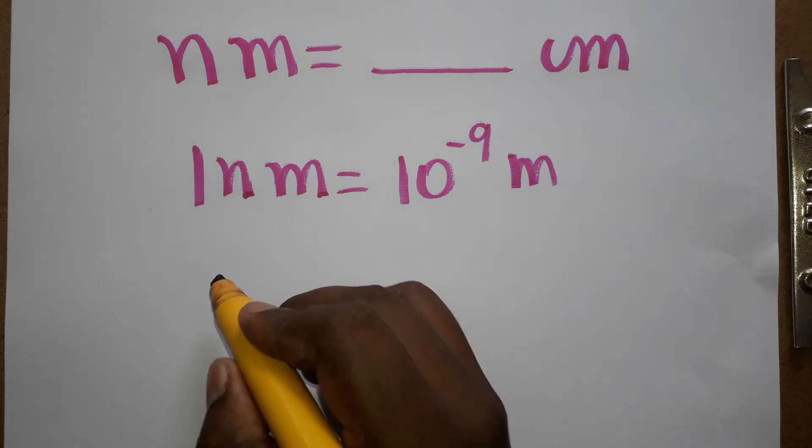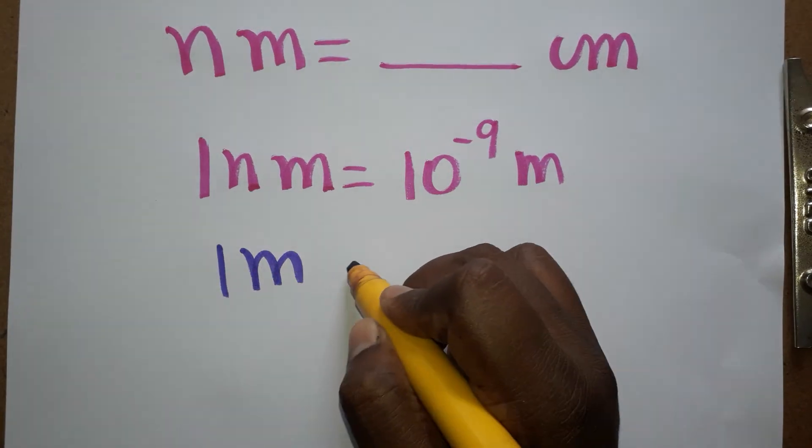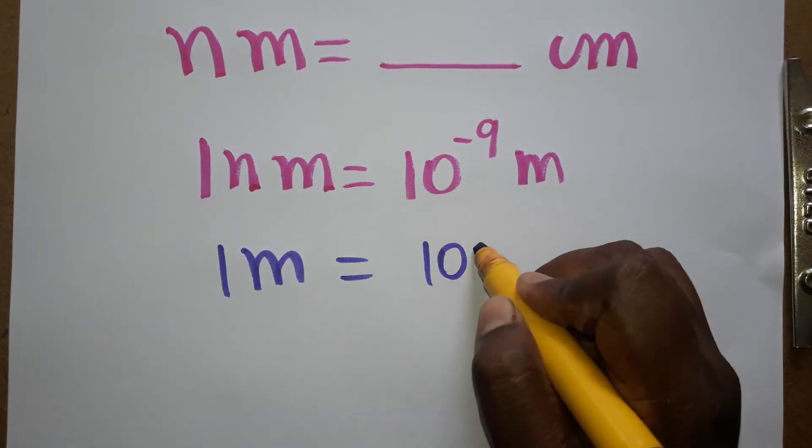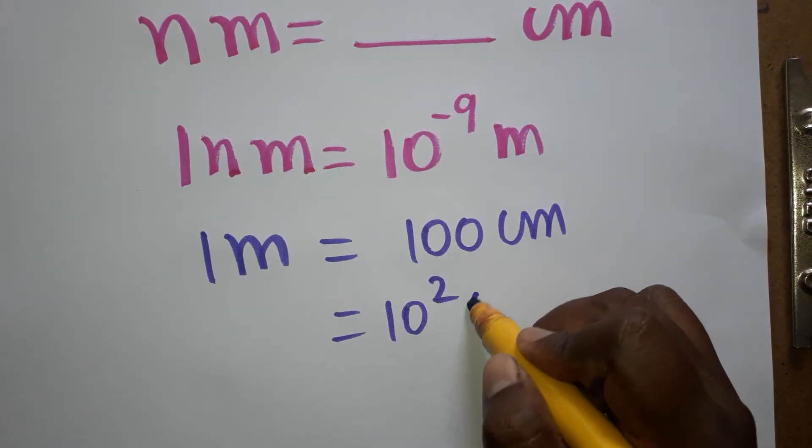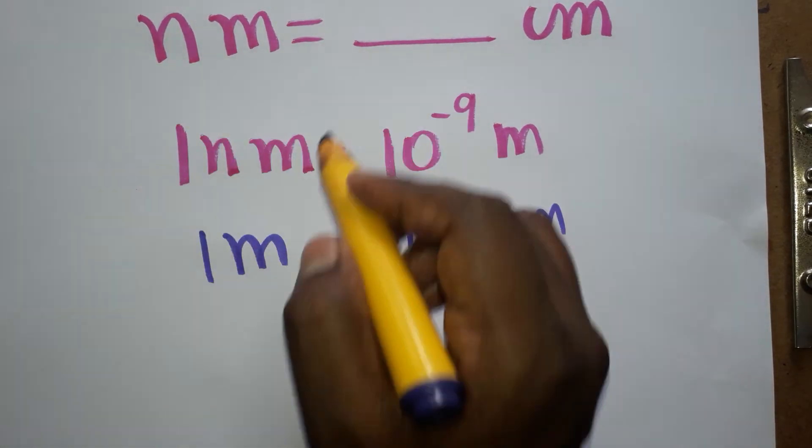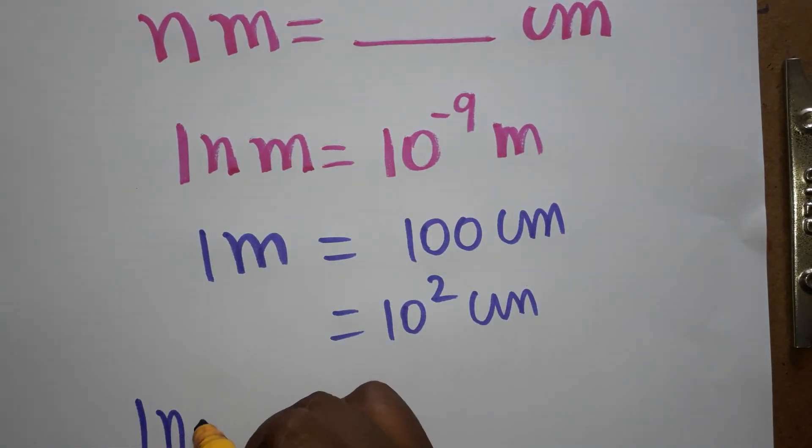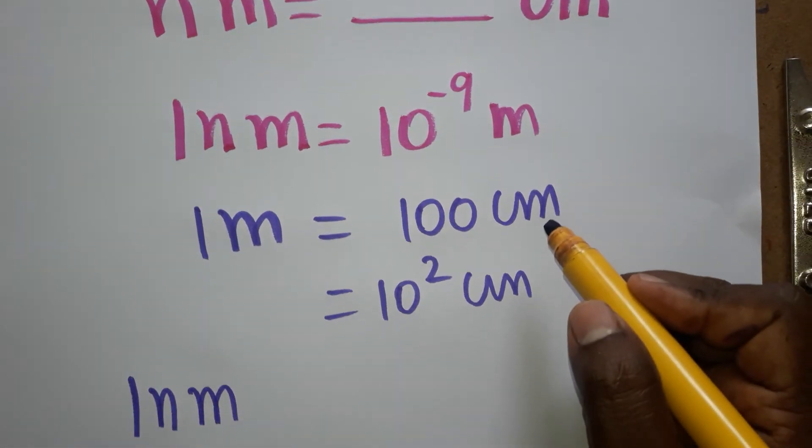One meter is equal to hundred centimeter, so we can take it as 10 power 2 centimeter. Now our question is: one nanometer is equal to how many centimeters?